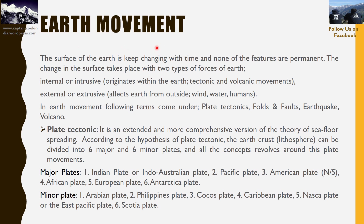The surface of the earth keeps changing with time, and certain features are permanent. Changes in the surface take place through two different forces: internal — also called intrusive — and external, also called extrusive. Intrusive forces originate within the earth, such as tectonic and volcanic activities. Extrusive forces act from outside, including wind, water, and human interventions. Earth movements include plate tectonics, folds, faults, earthquakes, and volcanoes.